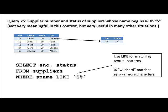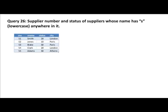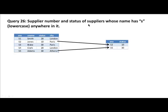So we are using the LIKE operator for pattern matching, and within these patterns you can have wildcard characters. The first wildcard character we've looked at is the percent wildcard character, which matches zero or more characters. Now for practice: give me the supplier number and status of suppliers whose name has a lowercase s anywhere in it. Here we are not saying starts with an S — we are saying the supplier name has a lowercase s anywhere in it.